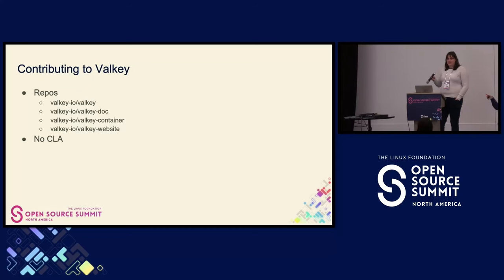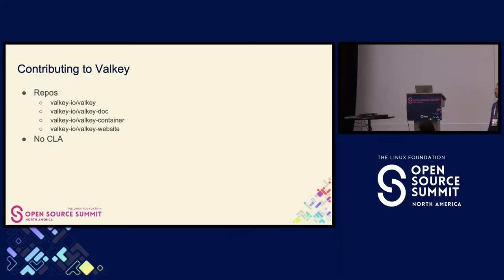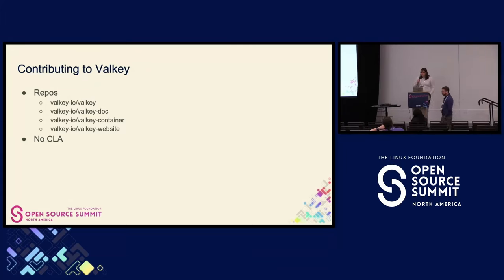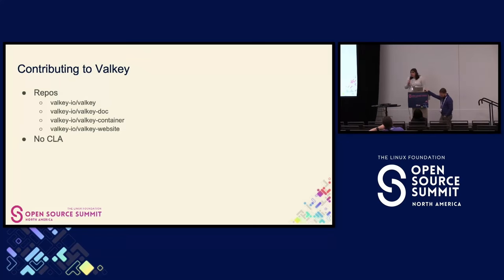Beyond the contributor community, what response have you seen from users and potential users? Most people are pretty excited about the fork. A lot of users want to be using open source software. There's definitely a contingent who says it was free before, it's free again. But I think a lot of people understand that having a reliance on one vendor is a pretty big risk to the supply chain. Having a community they can go to is really exciting. A lot of people are also saying: if AWS does it, if Google does it, if Oracle does it — there's so many big companies putting their weight behind it, and people are excited about that.